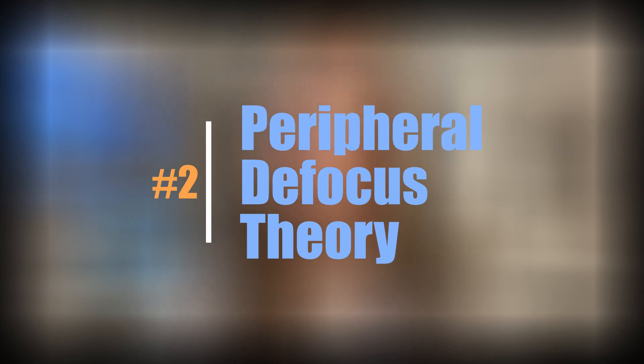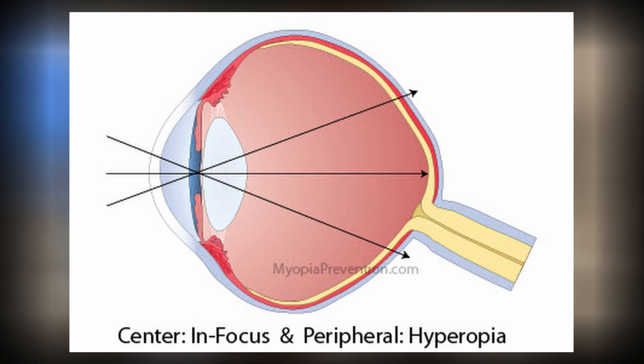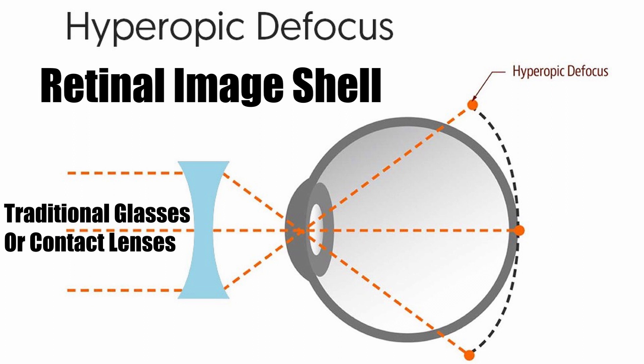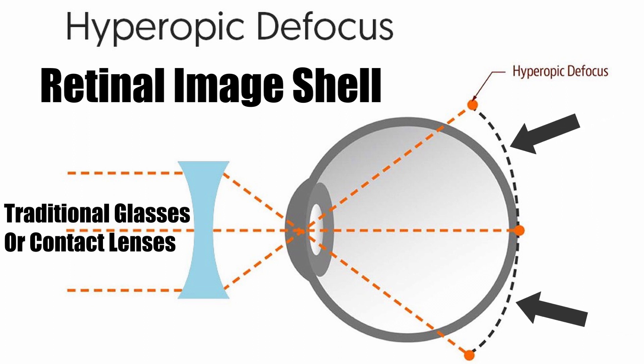Number two: the peripheral defocus theory. The principle of this theory is in the name itself, where there is essentially defocus of the light rays in the periphery of the retina. In the case of the myopic eye, when light is focused clearly on the elongated central retina, by default the peripheral rays are still being focused behind the eye. This is what we call peripheral hyperopic defocus. This is what's functionally happening in the myopic eye peripherally, and it is the precise reason why a child with myopia tends to worsen each year. If we were to connect the points of where all the light lands, we actually produce what we call a retinal image shell that's focused behind the retina.